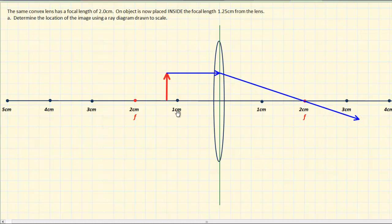Now the second ray, just like before, we're going to draw it so it goes straight through the center of the lens undeflected. So here's our second ray, straight through the center of the lens undeflected.